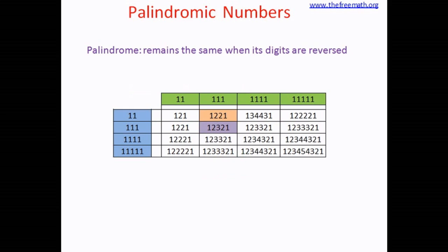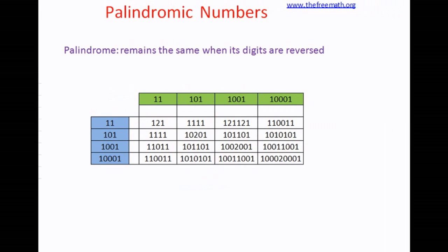If you look at the last column of products, you see how the products look. It looks like 122221, 1233321, 12344321, and so on. It's very interesting. I'm going to show you one more pattern.